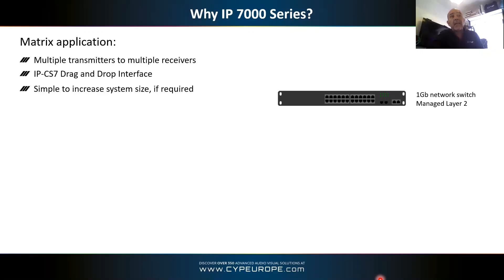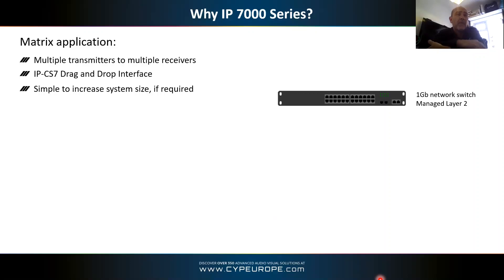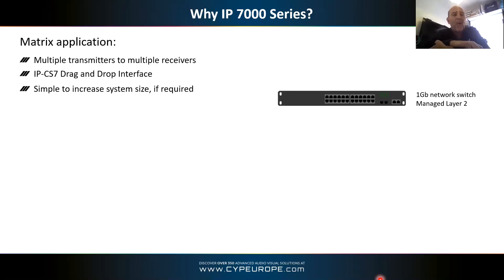A managed Layer 2 switch has all the features you need. You do need to make some small configuration changes: turn on IGMP snooping and change the jumbo frames. The first time with a particular switch it may take 10 or 15 minutes to find those settings, but once you're used to it, it's very simple. You can download the configuration file once you've done it and upload it to a new switch. There's a guide on our website — it's not complicated.